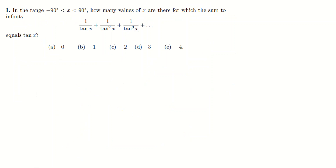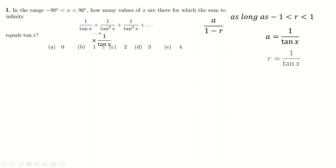Question I is quite interesting — and actually the question I got wrong originally. You're summing an infinite geometric series. The ratio from one term to the next is 1/tan x. The formula for summing to infinity is a/(1 − r), where both a and r equal 1/tan x. For this to work, r must be between −1 and 1 — I missed this crucial constraint. The sum must equal tan x.